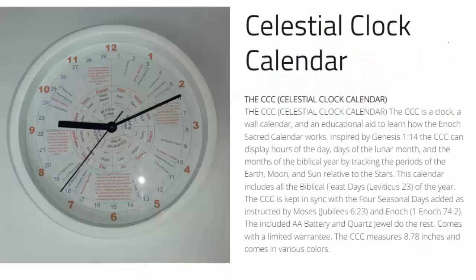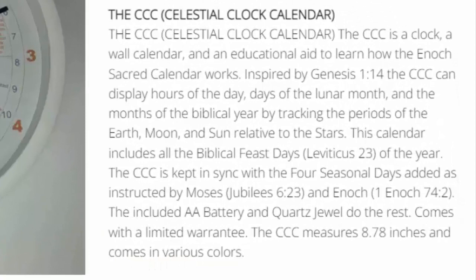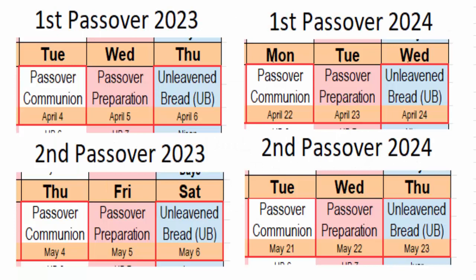This video is brought to you by the Celestial Clock Calendar, the official timepiece of the 144,000. Get your Celestial Clock Calendar at coachingafight.shop or follow the links in the description. Many viewers have seen the calendar and noticed it says Passover on April 5th but Passover communion on April 4th. This is the case every year — it's not unique to 2023. The Passover communion is actually on one day, the evening before the actual Passover day, and that's what we're going to prove in this video.